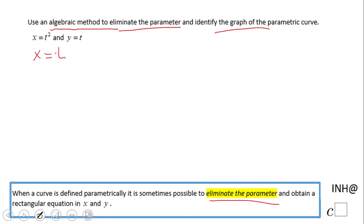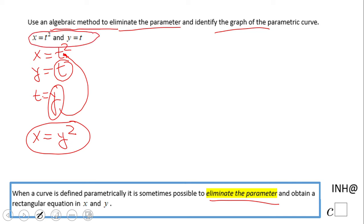We have x equals t squared and y equals t. If we notice, we already have a statement that says y equals t. So basically we're going to take t equals y and substitute it here. We end up with x equals y squared. This is the rectangular form of this parametric equation, which is a parabola.